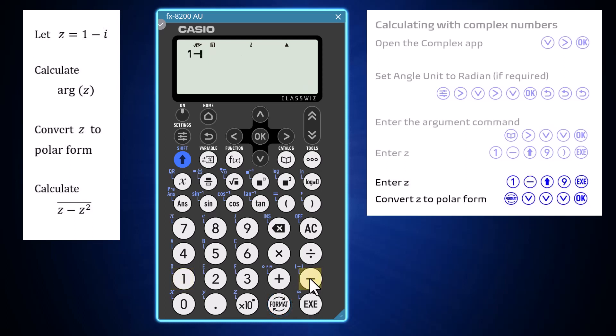first enter z as before, and then convert by pressing format, arrowing down to the polar form, and pressing OK or execute.